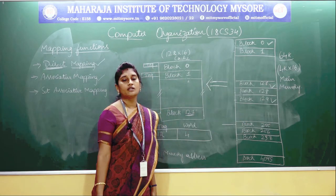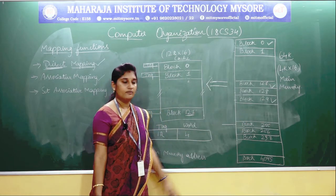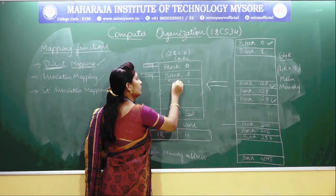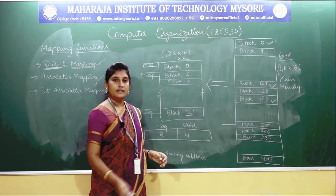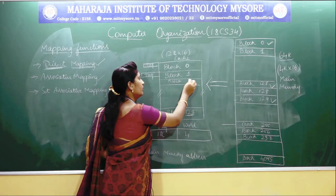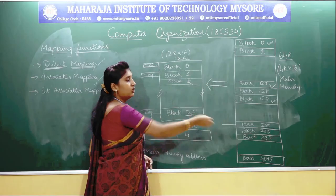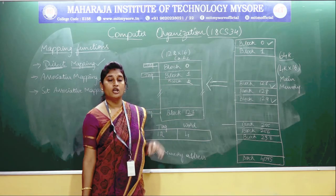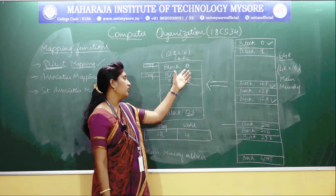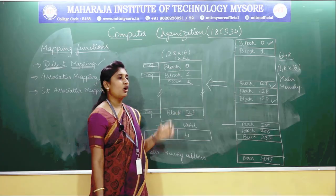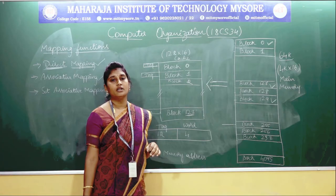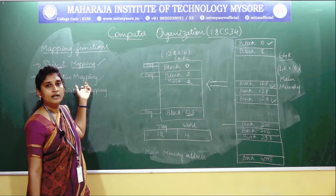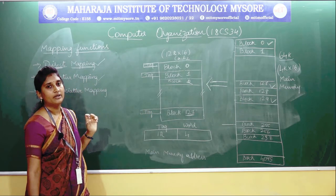If block 256 is executed frequently, you store it in block 2. Like this, you will be storing any number of blocks of main memory to any blocks of the cache memory. By this, you can reduce the number of unused spaces in the cache memories, which was a drawback in your direct mapping technique. This type of mapping technique is called associative mapping technique.